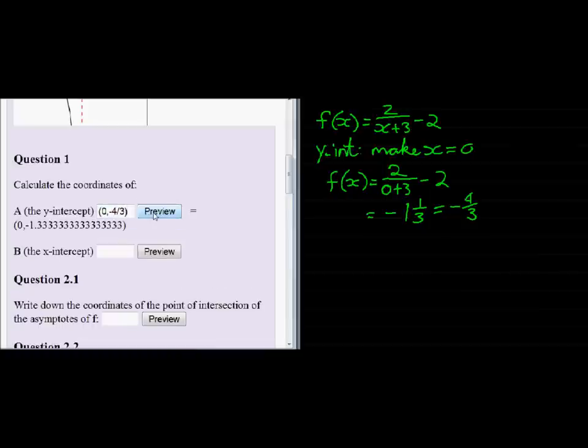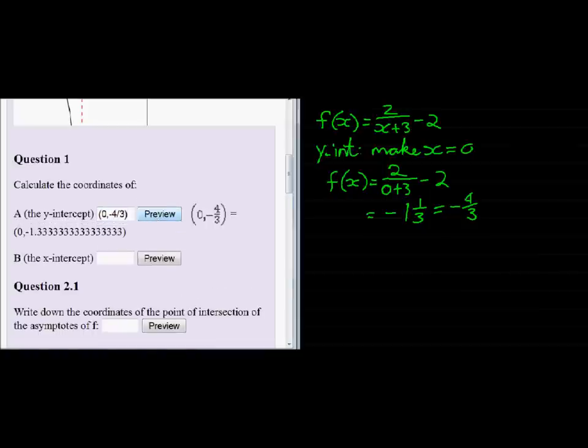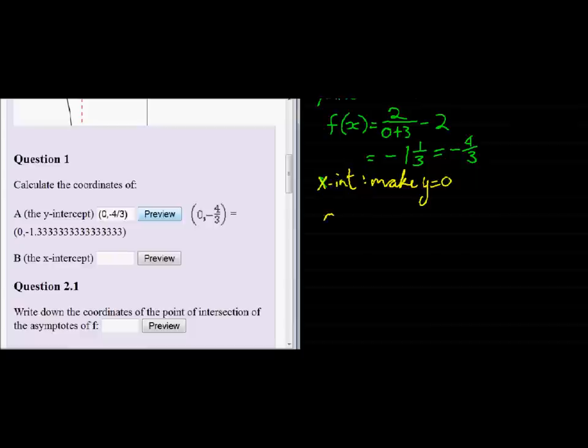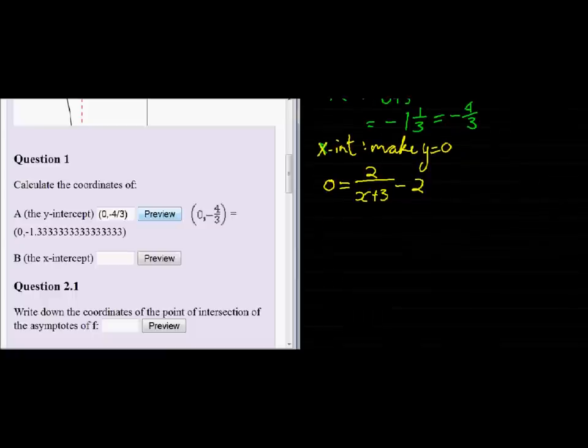Now for the x-intercept, we make y = 0. So 0 = 2/(x+3) - 2. We add 2 to both sides, giving us 2 = 2/(x+3).